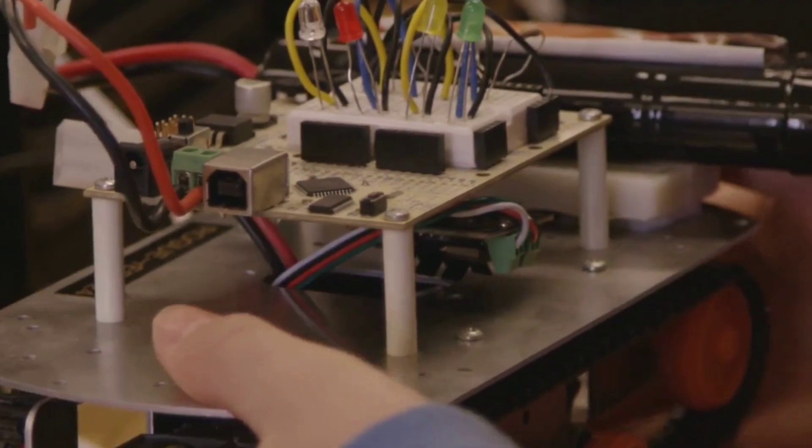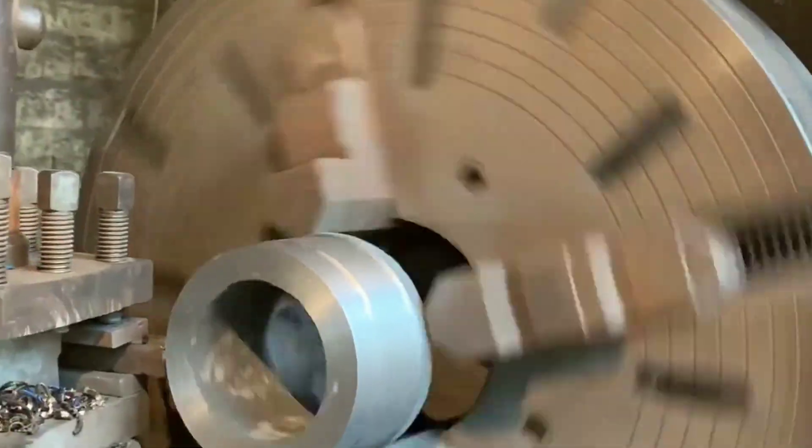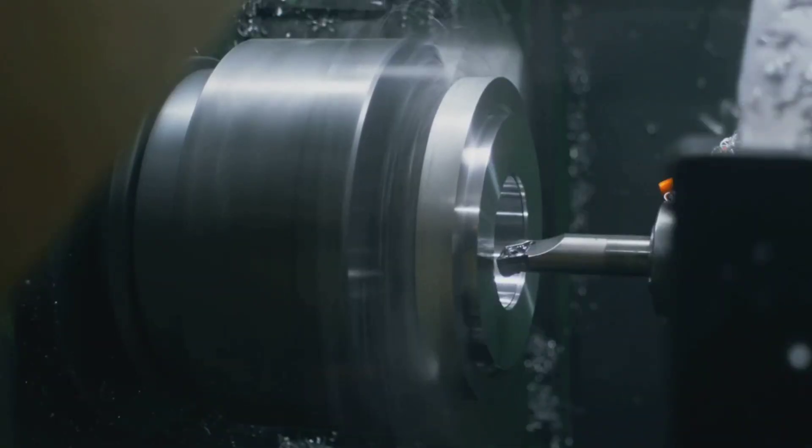To remember this, use the left-hand rule: index finger for magnetic field, middle finger for current, thumb for force. This simple rule predicts how the wire will move. Harnessing this predictable push is how we make motors spin. That's the magic at the heart of every DC motor.